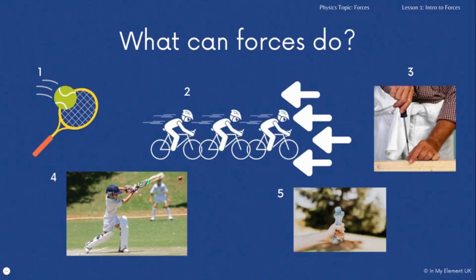There are five ideas here of what forces can do. The first one — with the bat and the ball — is that forces can make an object either speed up or start moving. When you hit that tennis ball it will start moving. The second one, with the people on the bike, is that a force can slow something down — it can slow the cyclist down or gradually make them stop.